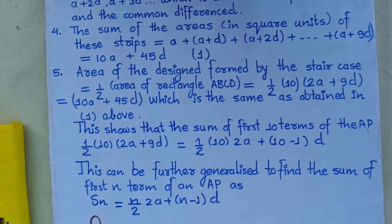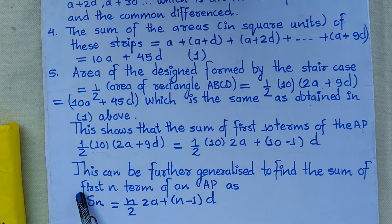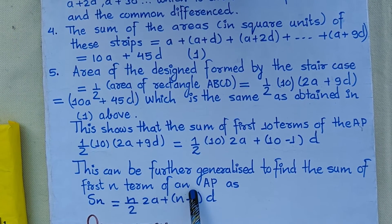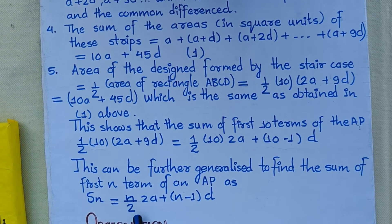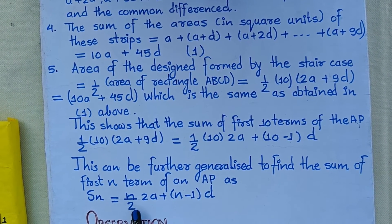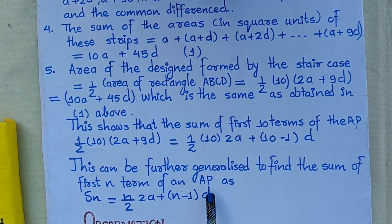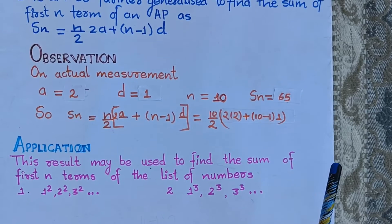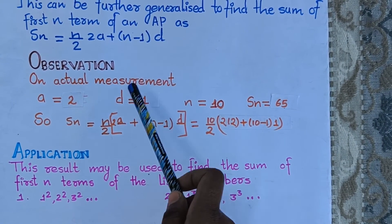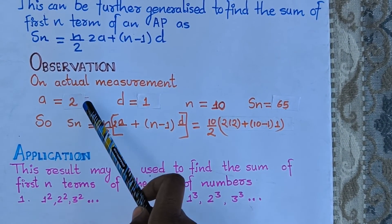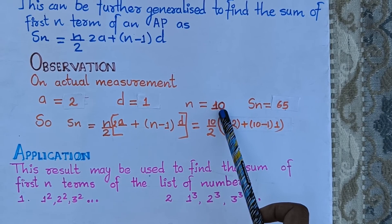This can be further generalized to find the sum of first n terms of an AP. Sn is equal to n upon 2 times (2a + (n − 1)d). The observations are based on actual measurement: a is equal to 2, d is equal to 1, and n is equal to 10.